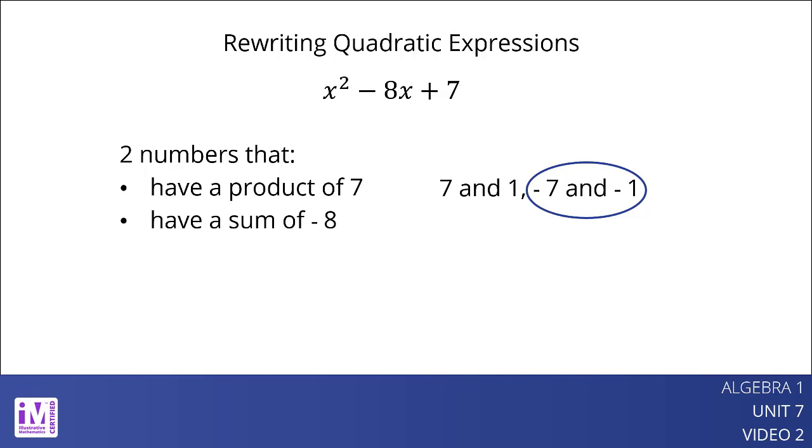The factored form of x squared minus 8x plus 7 is therefore the quantity x minus 7 times the quantity x minus 1.